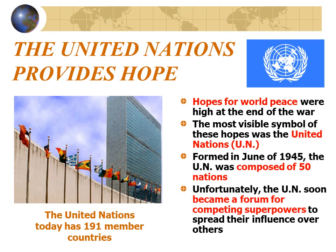The United Nations was created after the end of World War II to attempt to avoid an outbreak of hostilities and save lives. The most visible symbol of hope for world peace was the United Nations, formed in June of 1945 and composed of 50 nations. Five nations were selected to be on the Security Council, each given the right to veto anything they saw as a threat to their own security. These five nations included the United States, the Soviet Union, England, France, and China.